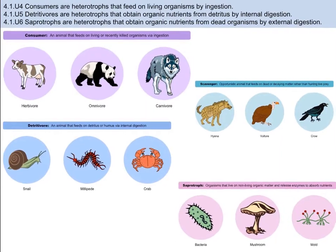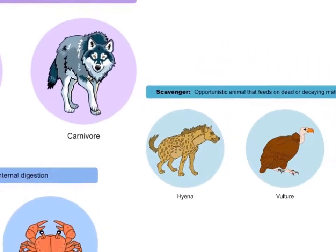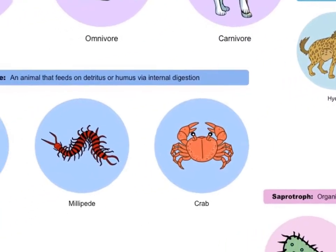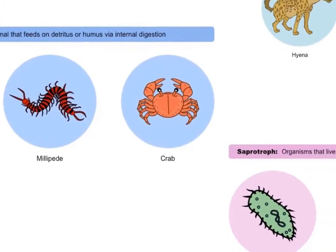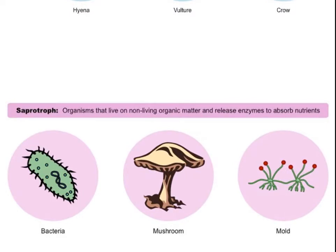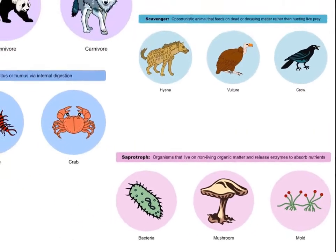On the heterotroph side: herbivores, carnivores, and omnivores are consumers, with scavengers feeding on recently dead organisms. Detritivores ingest detritus or humus — their bodies take the organic materials they need and excrete the rest, which is broken down and can be used again. Examples include crab, snail, and millipede — essentially the recycling team. Saprotrophs secrete digestive enzymes, which break down their food source, and then absorb the nutrients they need. It's like if humans threw their stomach acids, enzymes, and bile on whatever they wanted to eat, waited while it broke down, and then drank it up like a smoothie. Three examples of saprotrophs are mushrooms, bacteria, and mold.